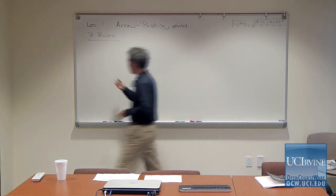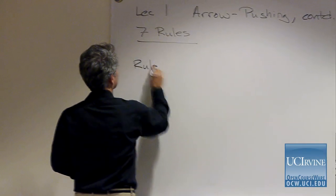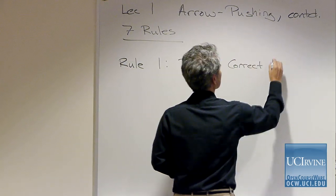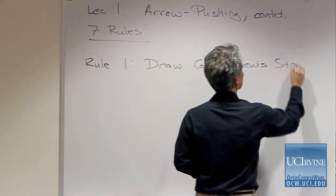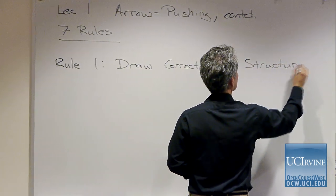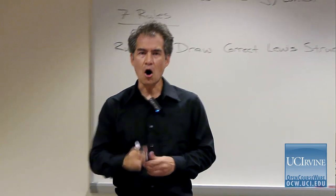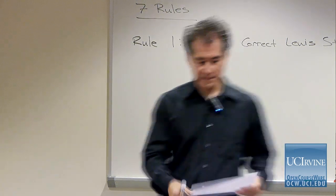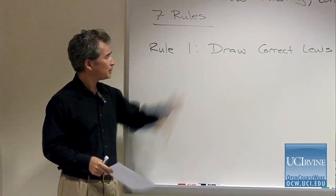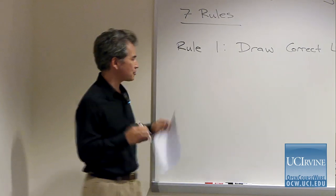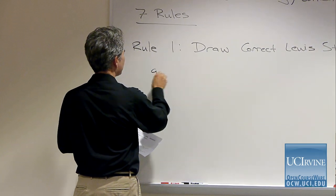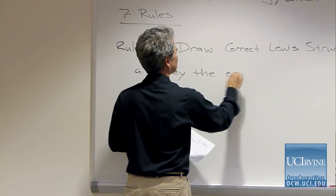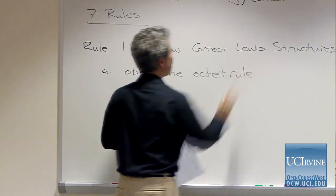Let's start with rule number one. This seems like the simplest rule: draw correct Lewis structures. That's one of the first things you learn when you take general chemistry as an undergraduate. This rule has several components. The first part is to obey the octet rule.